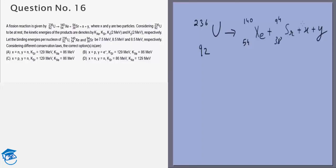If you look at the options, X and Y are either a proton, a neutron, or an electron. We can just balance these. We know that 140 plus 94 is 234, so X plus Y has to have a total sum of 2. And 92 is equal to 54 plus 38, so it has to have an atomic number of 0. That means we have to have two neutrons.